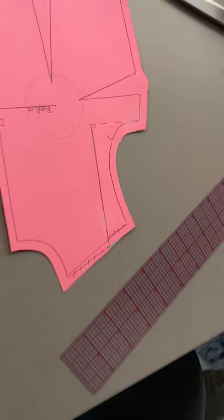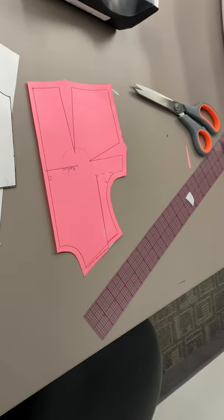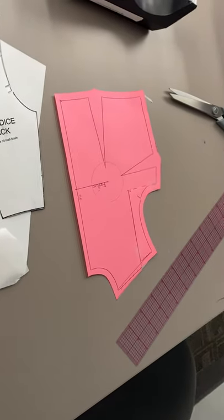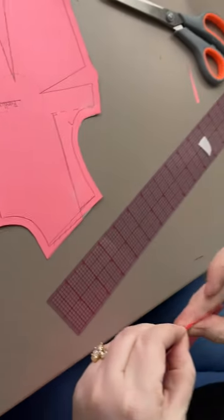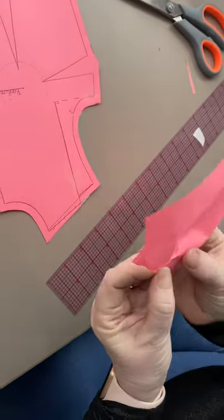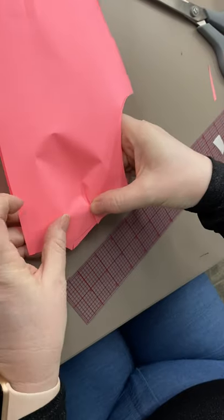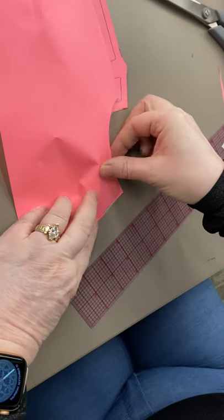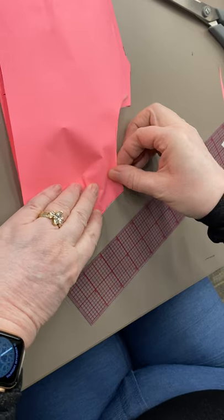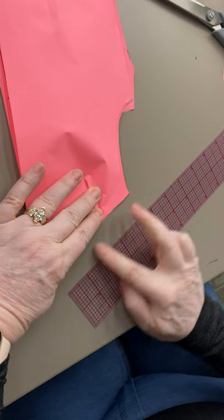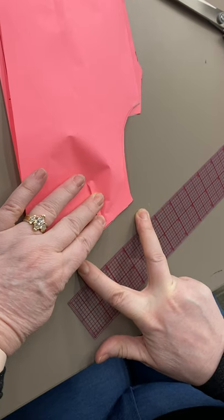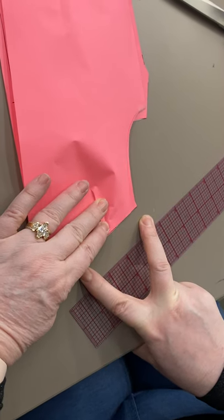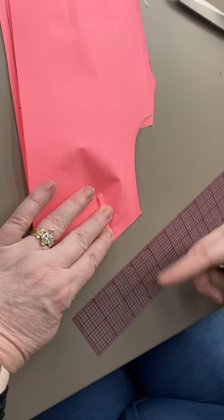Now if I take number three and I fold in my dart and I put right sides to right sides, same angle, same distance. They're the same. Even though one we use slash method and one we use seam method, we still accomplished the same thing.